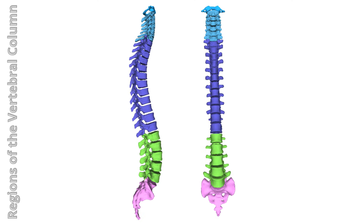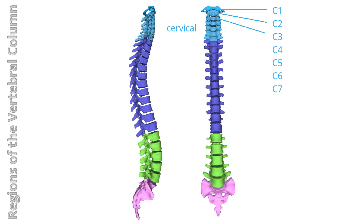Regions of the vertebral column. We'll start superiorly and work our way inferiorly. Cervical region: consists of seven vertebrae in the neck, articulating superiorly with the occipital bone of the skull at the atlantooccipital joint and inferiorly with the first thoracic vertebra.